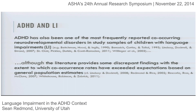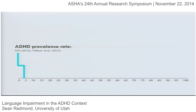If you try to synthesize what's available on ADHD and language impairments in terms of comorbidity, you can muster citations to support the claim that these things are frequently co-occurring. But you can also identify studies where there is much less of a prevalence rate of co-occurrence, and in some studies the co-occurrence rate gets very close to the population estimates.